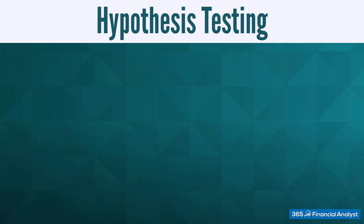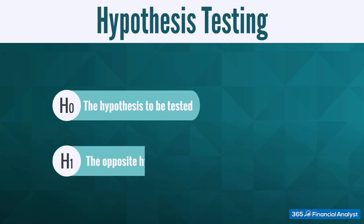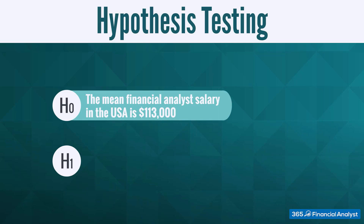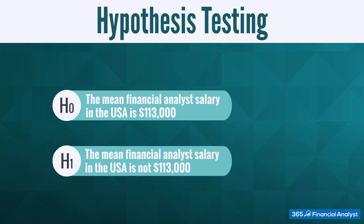As a rule of thumb, when doing hypothesis testing, there are two hypotheses that are made: the null hypothesis, denoted by H0, and the alternative hypothesis, denoted by H1 or HA. The null hypothesis is the one to be tested, and the alternative is the opposite case. For example, the null hypothesis could be: the mean financial analyst salary in the USA is $113,000, while the alternative, H1, would be: the mean financial analyst salary in the USA is not $113,000.